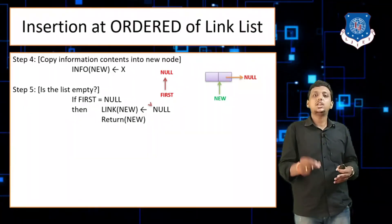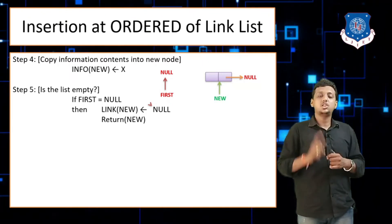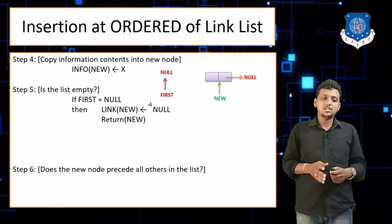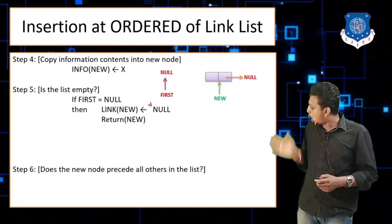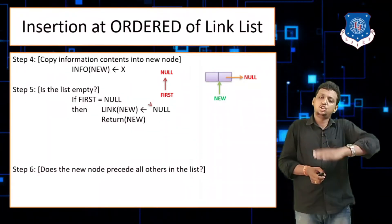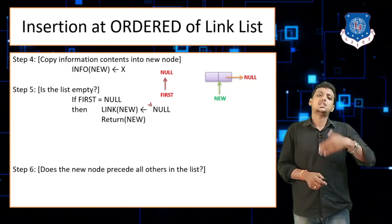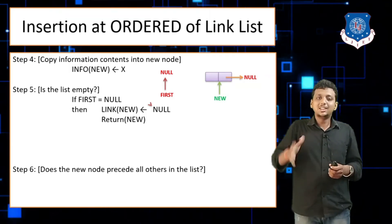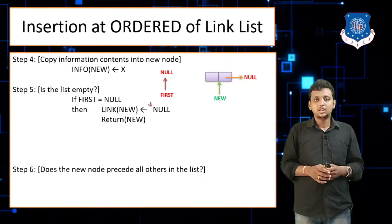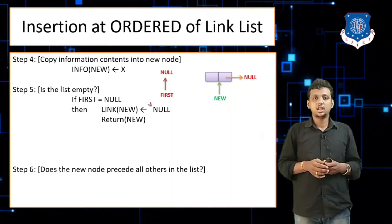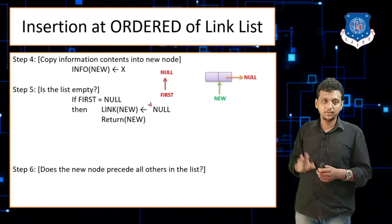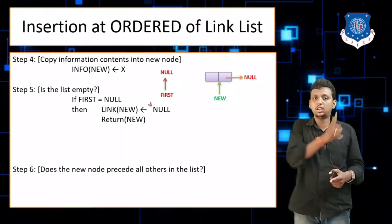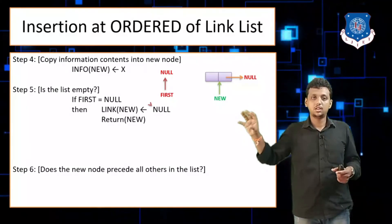That completes the first condition — when the linked list does not exist. The second condition is: does the new node precede all nodes of the list? That means: is the value to be inserted lesser than all the nodes of the list? If so, it must be inserted at the first position. For example, if the list is 10, 20, 30, 40 and you insert 5, then 5 is lesser than all values.